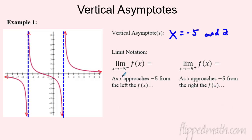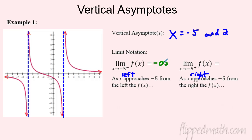Now we're going to look at one-sided limits. The limit as x approaches negative five from the left — the little minus sign means from the left side. A little plus sign means from the right side. So let's follow the graph at negative five from the left: I'm falling in, going down, down, down — all the way to negative infinity. From the right side at negative five, I'm going up, up, up — all the way to positive infinity.